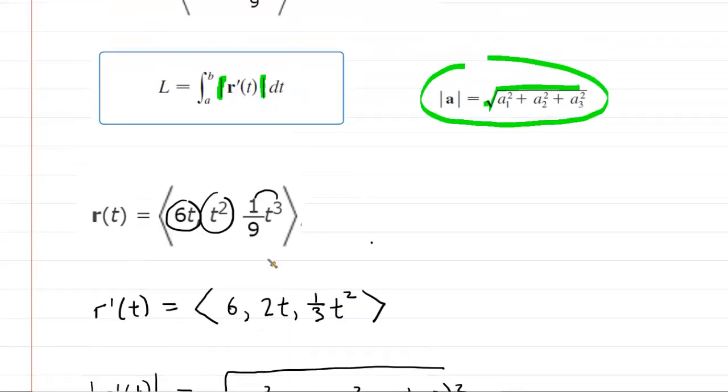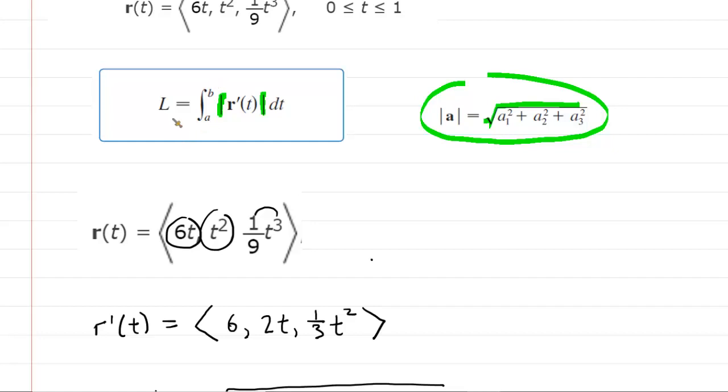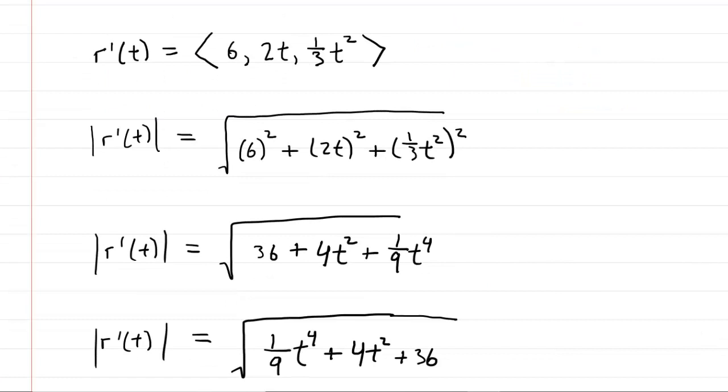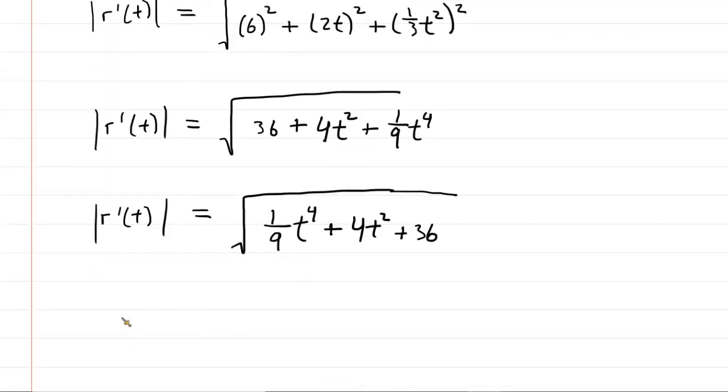If we sneak a peek back at our arc length equation, we now have to set up an integral from a to b. And please note that the a and the b are simply the lower and upper bounds of t, respectively. So, we're integrating from 0 to 1, in this case, of the magnitude of r prime of t. So, here would be the setup for the arc length.